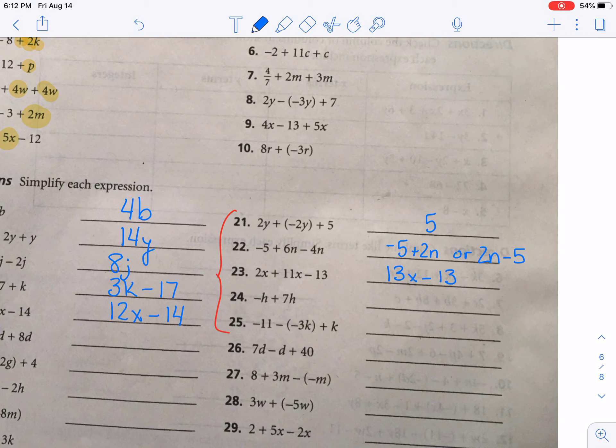For 24, we have a negative h or a negative 1h plus 7h. So that makes 6h. Now 25, we get a little review of subtracting integers, subtracting negatives. Remember, you can make that into plus a positive. So then you have a negative 11 plus 3k plus k. So that negative 11 just stays there. It does not combine with the others. But the positive 3k and the positive 1k make positive or plus 4k. Or if you prefer, you can write 4k minus 11. Same thing.